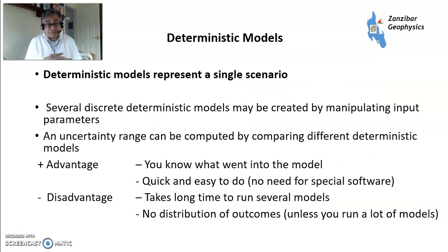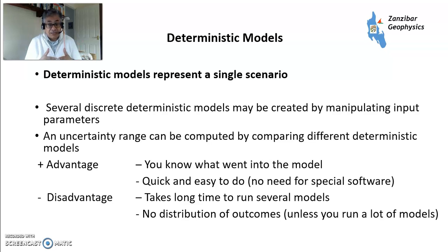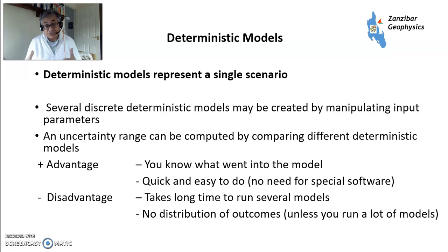Deterministic models give you a discrete single scenario. You can have several discrete models by varying certain parameters within the volumetric equations — for example, varying the porosity up and down, varying the net to gross up and down, et cetera. The advantage of deterministic is they're fairly quick and easy to do; you can do it on a spreadsheet. You don't need any specialist software like GeoX or Crystal Ball. The disadvantage is that running several models can take some time, and you don't get a distribution of outcomes unless you run a lot of models — even a dozen models doesn't really tell you where you are.